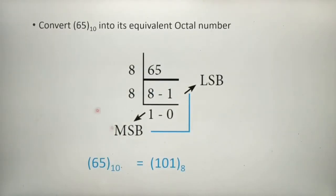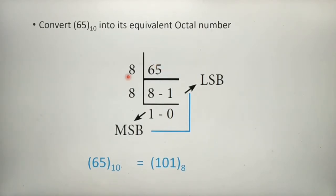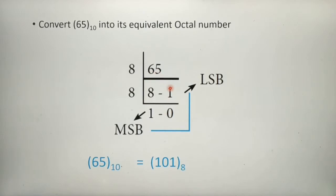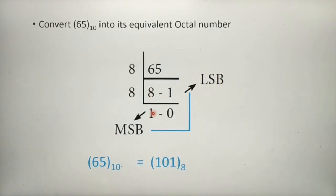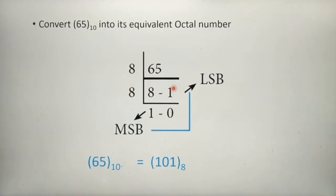Next example: convert 65 (base 10) to its equivalent octal number. Divide 65 by 8 — we get quotient 8 and remainder 1, since 8 eights are 64, leaving 1 as remainder. Check whether 8 is less than 8 — no, it is equal to 8, so we divide again: 8 ÷ 8 gives quotient 1 and remainder 0. Now we stop and write the result: last quotient 1, last remainder 0, first remainder 1 — so 101 is the octal number for decimal 65.